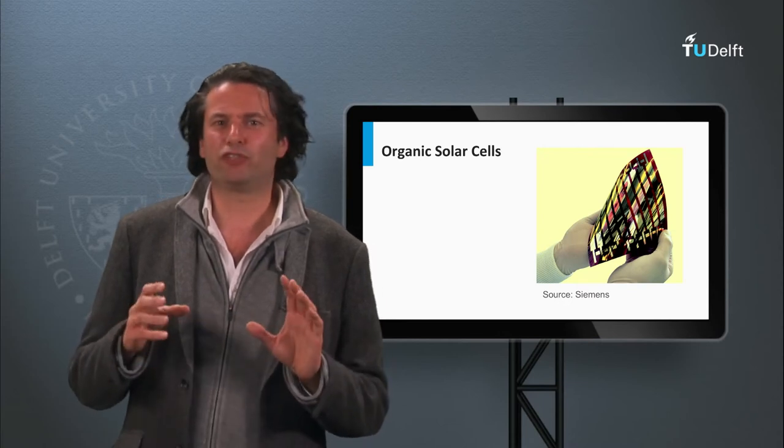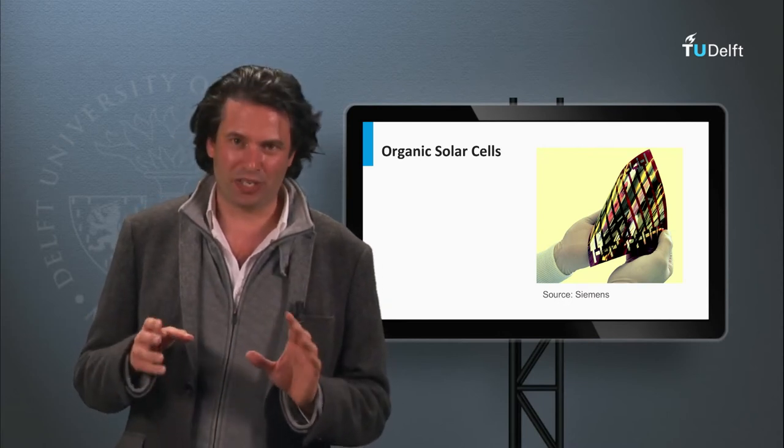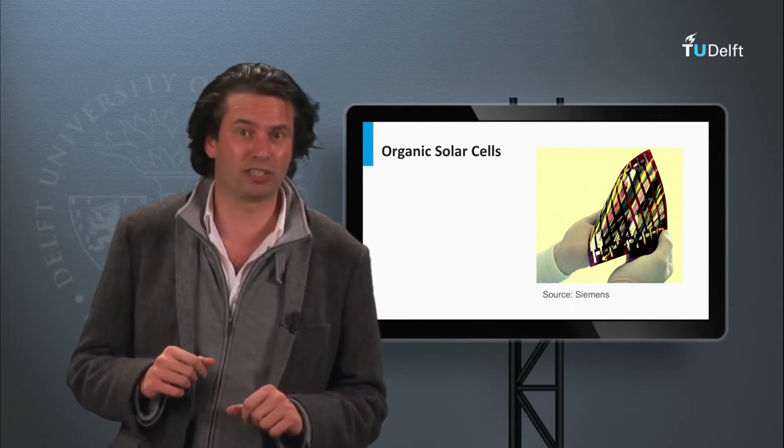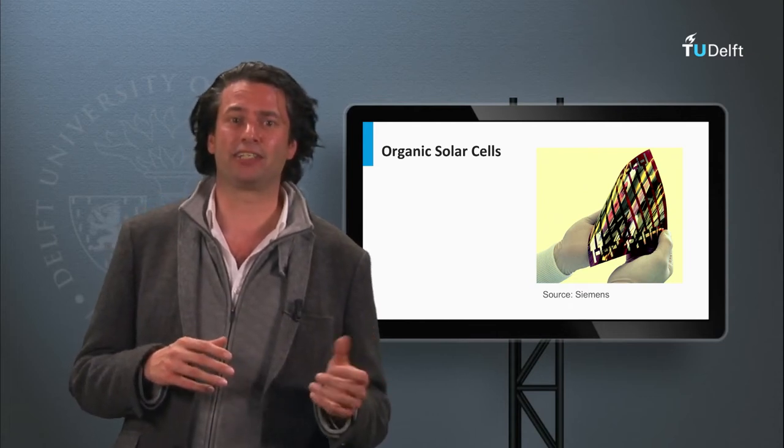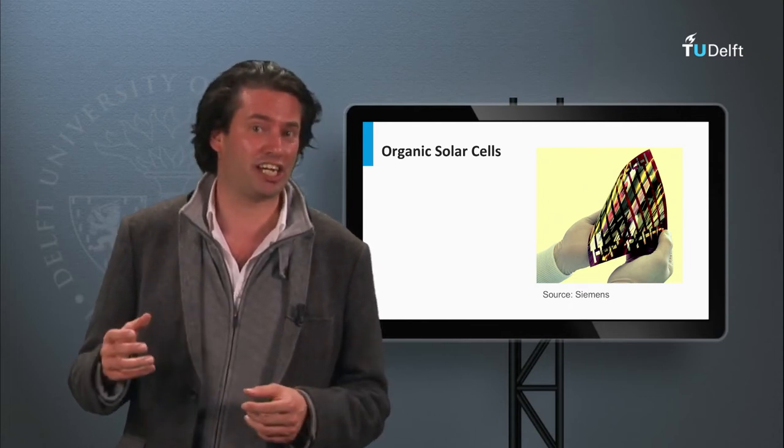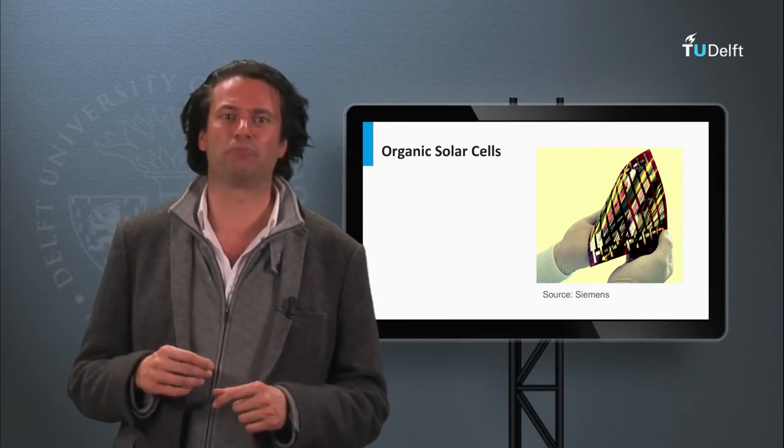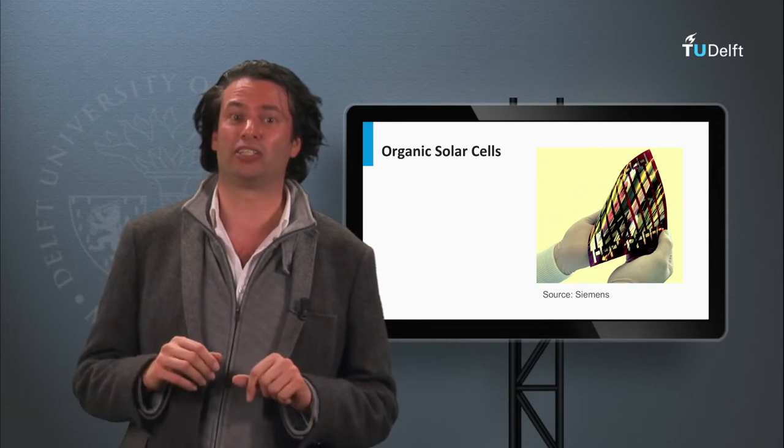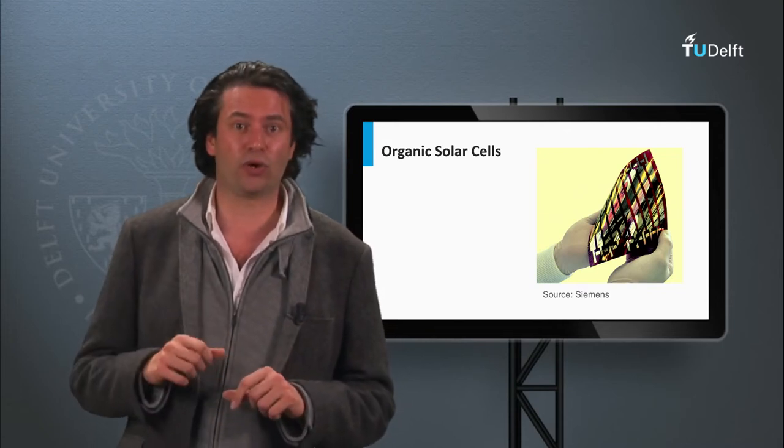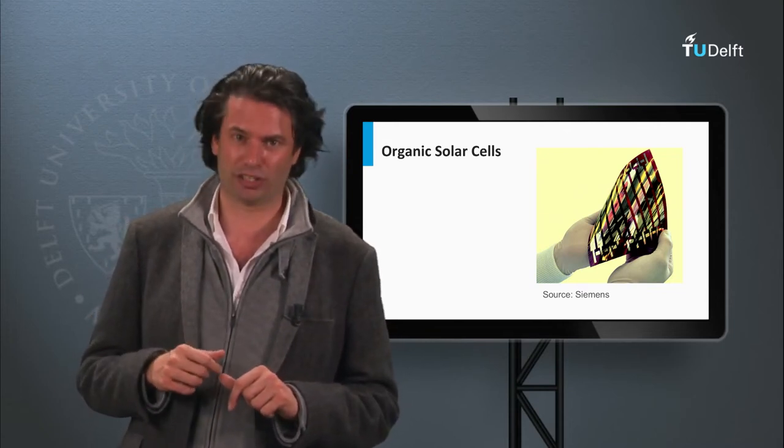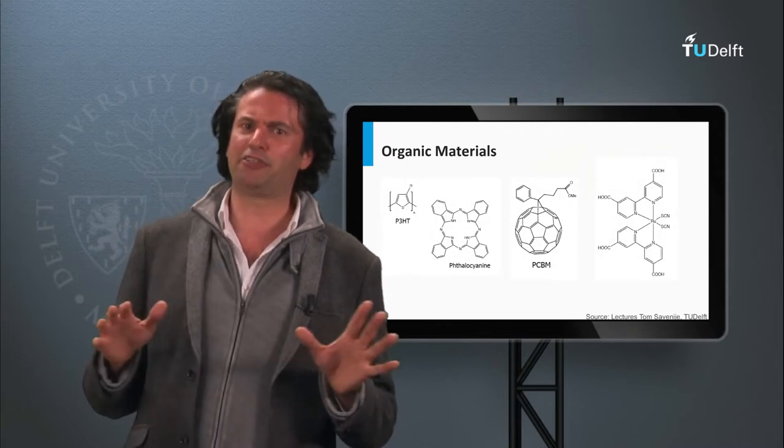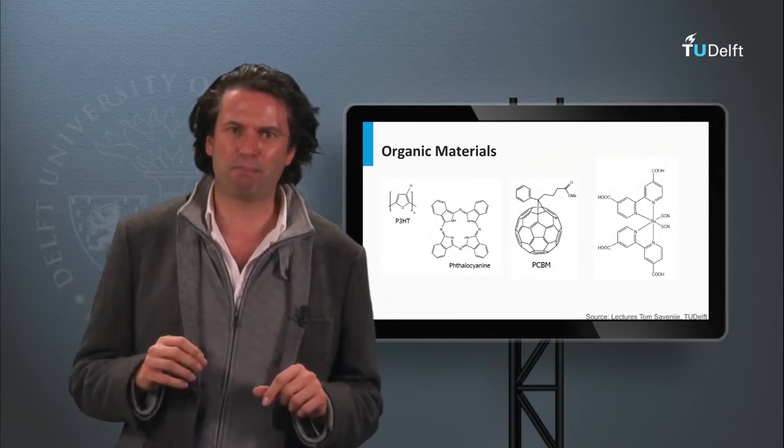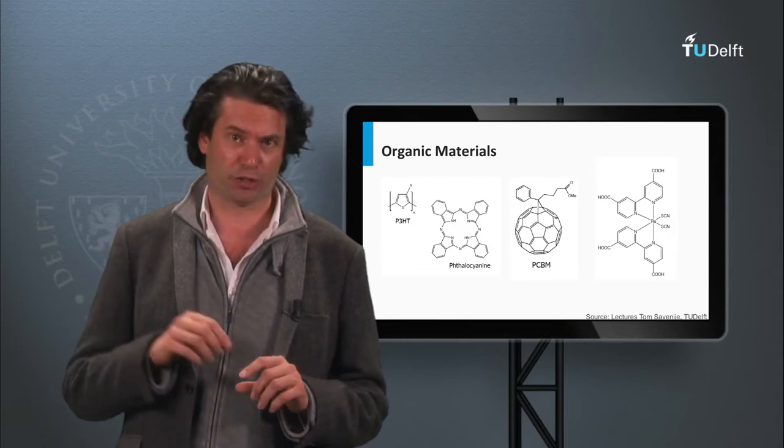In this blog we leave solar cell technology based on inorganic semiconductor materials like amorphous and nano-crystalline silicon, cadmium telluride, CIGS, and III-V semiconductor materials. We are going to look at organic solar cells like polymer cells or dye-sensitized solar cells. The materials used are conductive organic polymers or organic molecules.